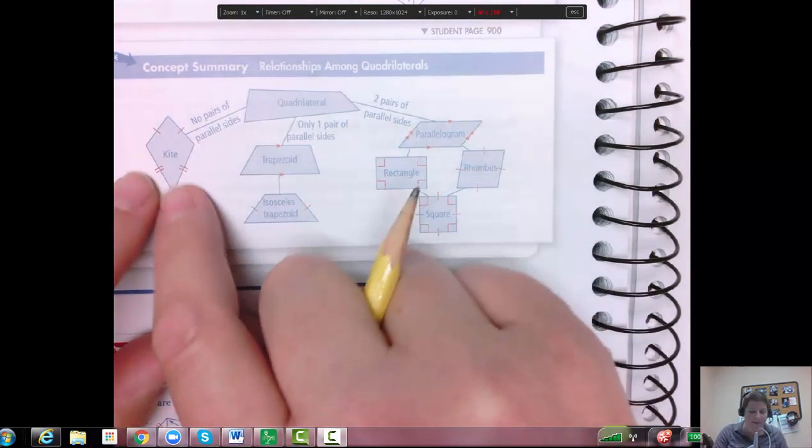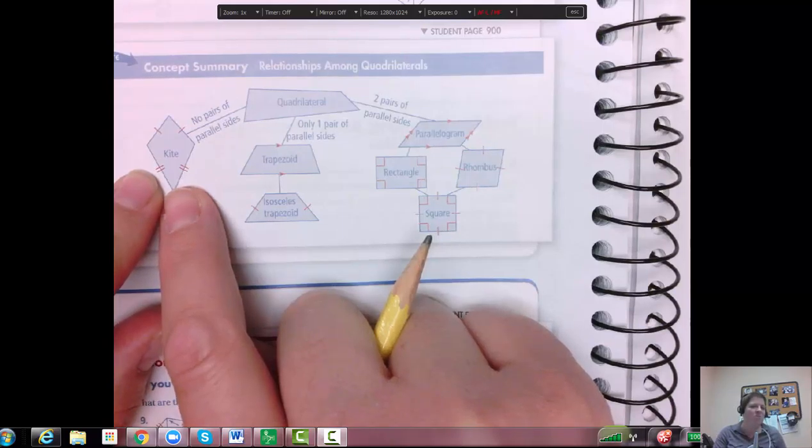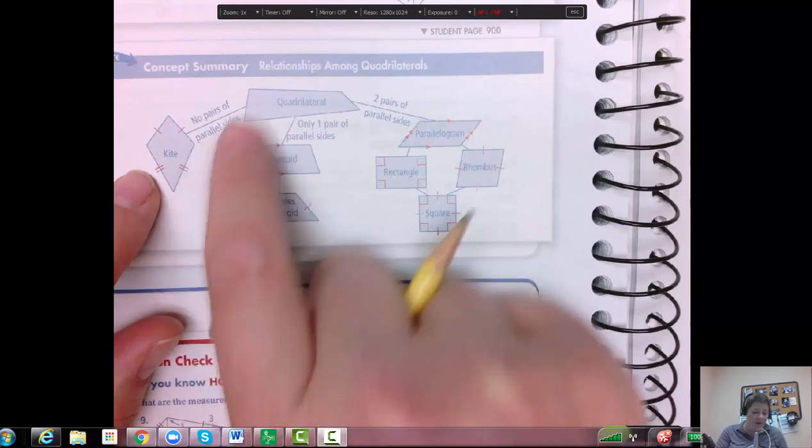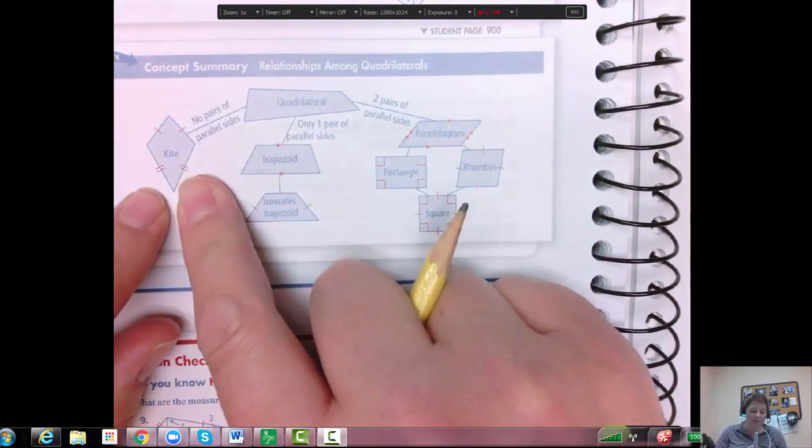Over here is a kite because it's kind of in its own little category and there's no special kites or anything. So you have no parallel sides and that makes you a kite with those congruent sides.